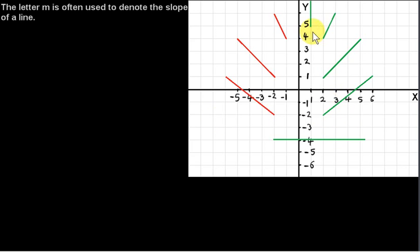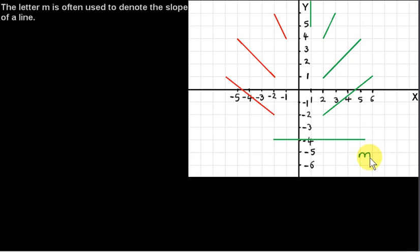We're going to look at the slopes of these lines shown. The letter M is often used to denote the slope of a line. So I will denote the slope of this line here by M1 — you can say this is the first line we're looking at. The slope of a horizontal line is 0.